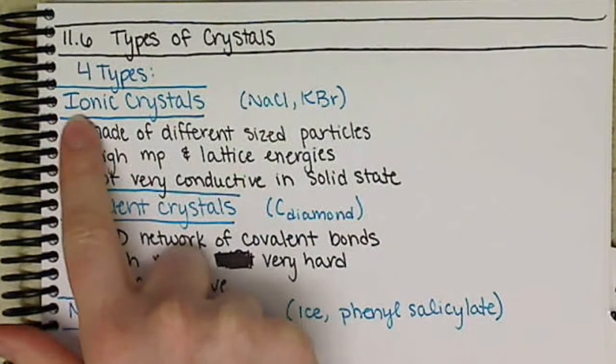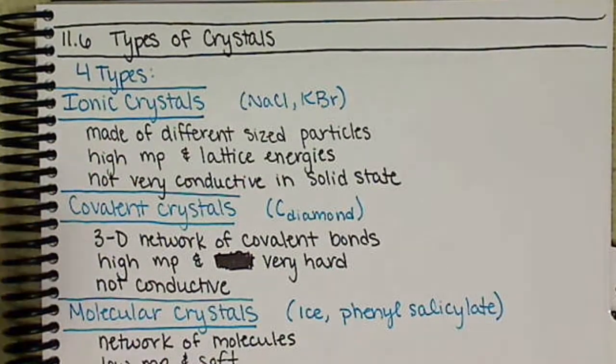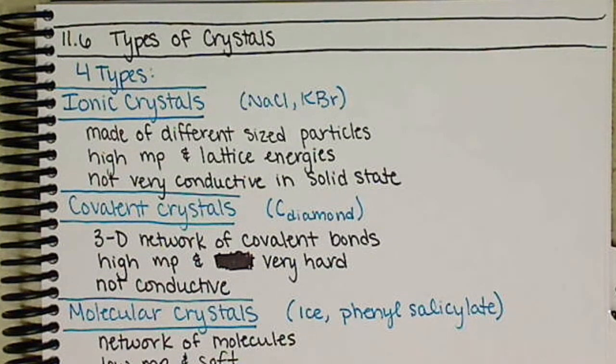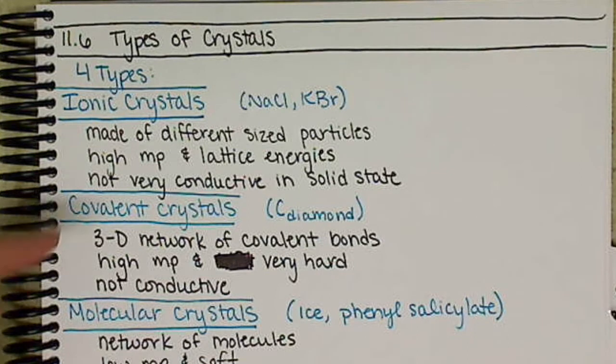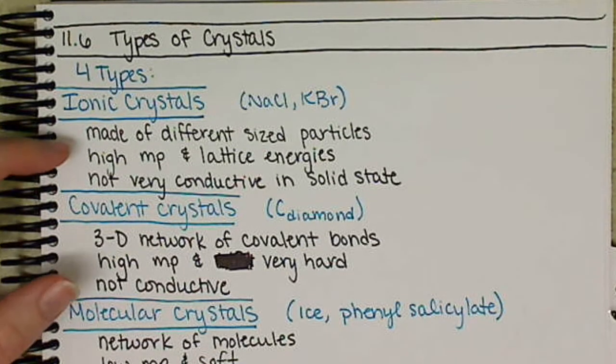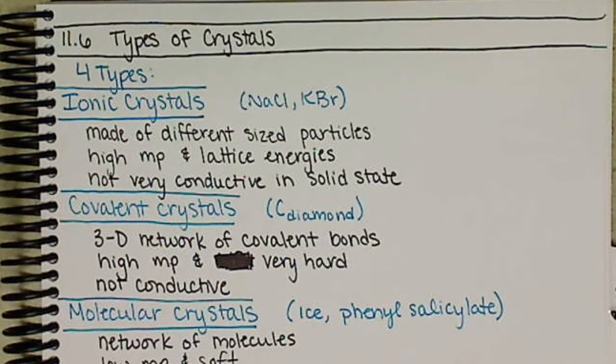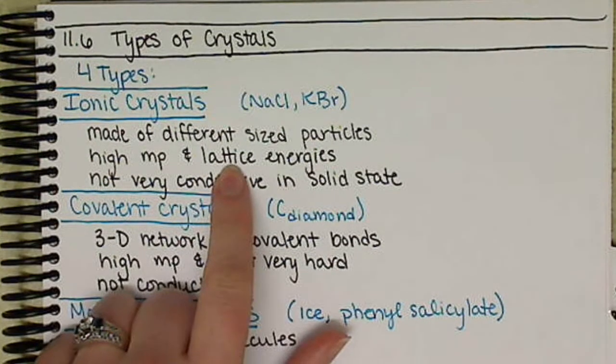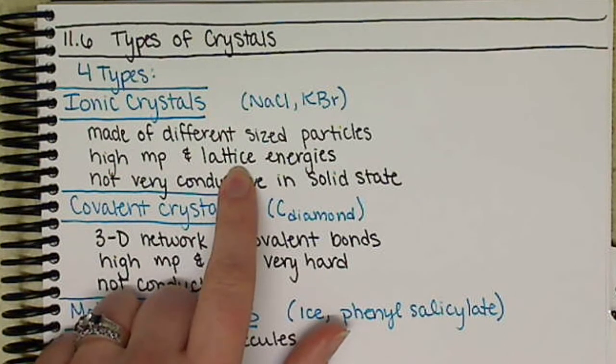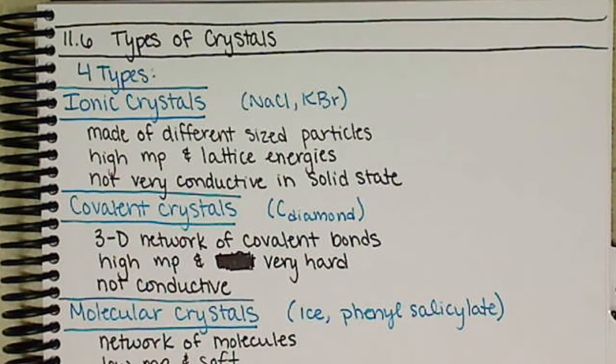We have four different types. We have the ionic crystals. They're going to be made of different sized particles. In other words, you have a cation, anion, so you have different sizes there within the crystal. That's going to affect the intermolecular forces, the IMF, so they have a high melting point as well as high lattice energies. Remember lattice energy from chapter 9, the energy required to break apart an ionic compound into its gaseous ions.